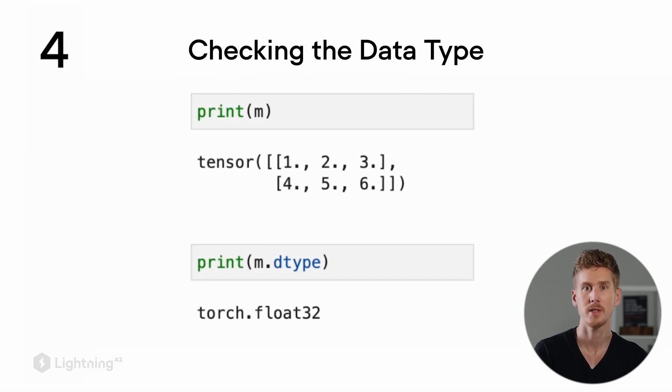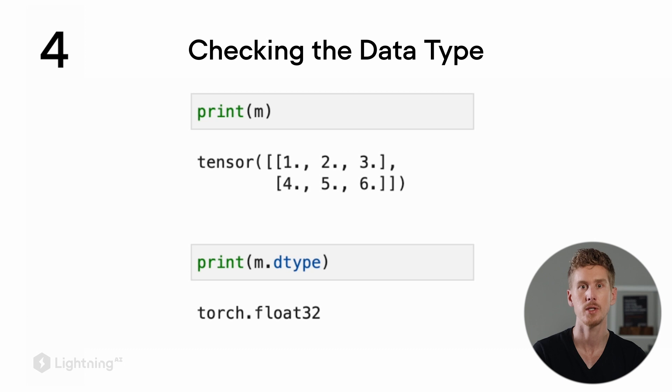Often, we also want to know the type of data stored in our tensor. Previously, we learned that tensors can only store data of one type—this could be integer, float, and so forth. With the .dtype attribute, we can check the type of data stored in that tensor.